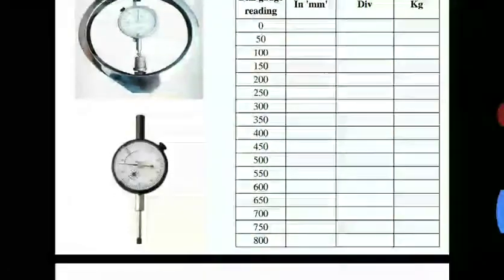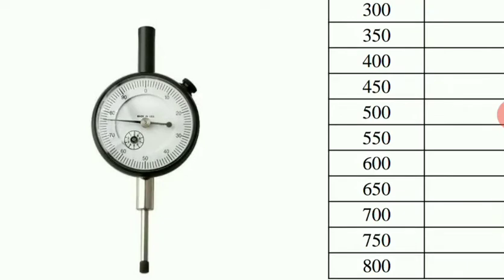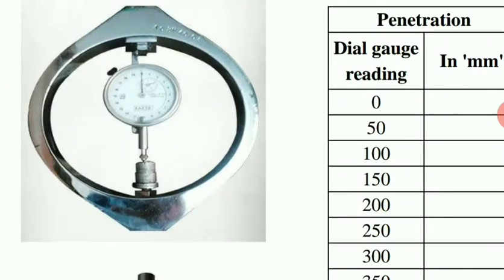The dial gauge readings start from 0, 10, 20, 30, 40, 50, up to 90, and then 0 again, meaning it has cycled to 100. The proving ring starts from 0 to 20, and between 0 and 1 there are five divisions. Each division equals 4.75 kg, so one division is 4.75 kg.